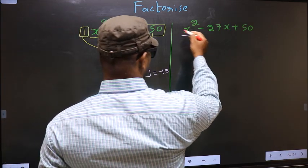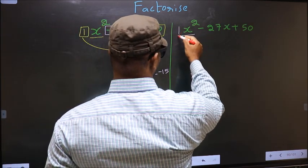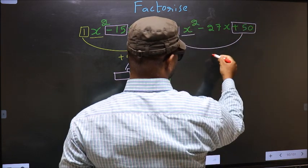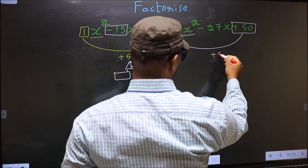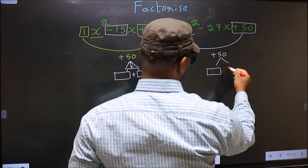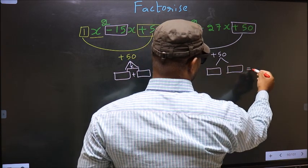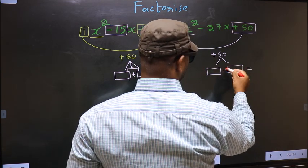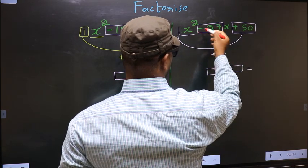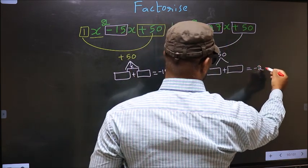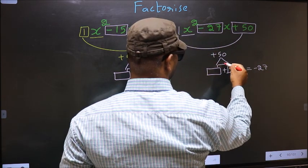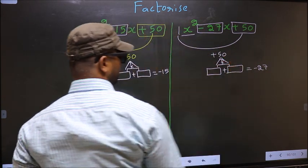For the second expression, the x squared coefficient 1 multiplied to the constant plus 50 gives plus 50. Now look out for two numbers such that when you add them you get the middle coefficient minus 27, and also when multiplied you should get plus 50.